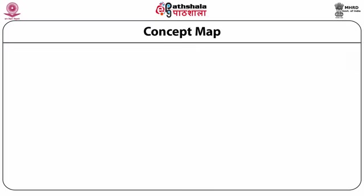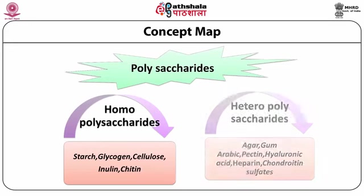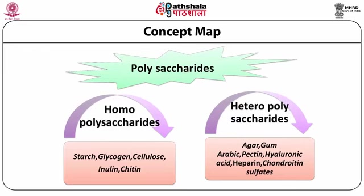If you see the concept map of polysaccharides: homopolysaccharides examples are starch, glycogen, cellulose, inulin and chitin. In heteropolysaccharides, examples are agar, gum arabic, pectin, hyaluronic acid, heparin, chondroitin sulfates. You know that agar, which is highly used as a solidifying agent in the preparation of bacteriological medium, is a polymer — a heteropolymer. Polysaccharides are of two kinds: homopolysaccharides and heteropolysaccharides, based on the type of monosaccharides they consist of.